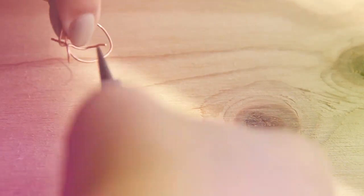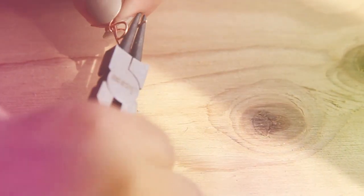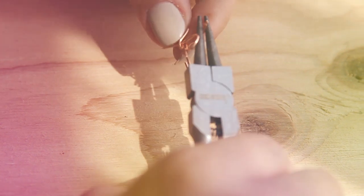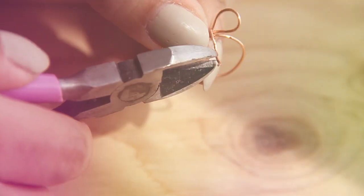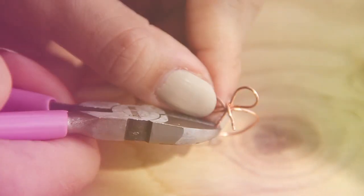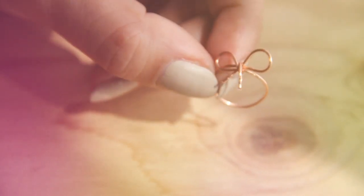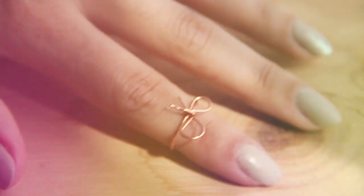Now here comes the tricky part. So you're going to take one of these stems, bend it backward up and around the middle of the bow. Then you're going to cut off or snip off any extra stem. You don't want the stems too long because then they might poke you. And now you have a cute little above knuckle bow ring.